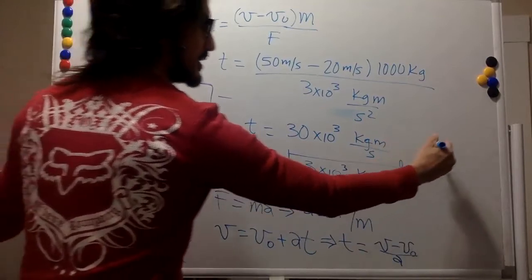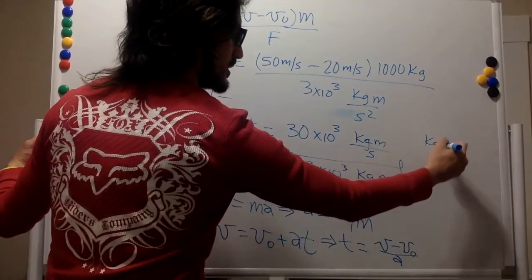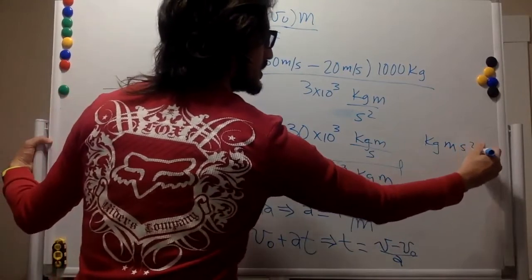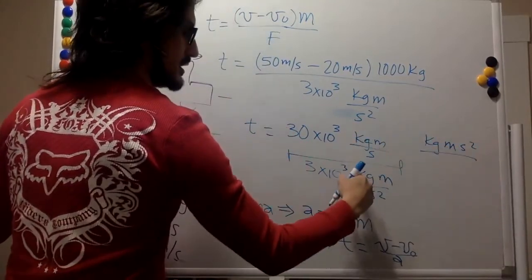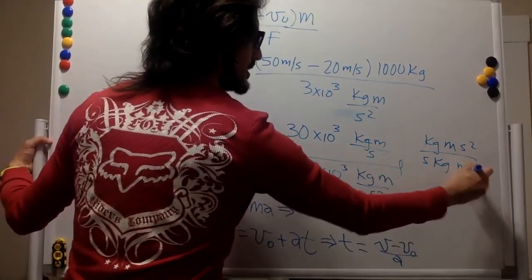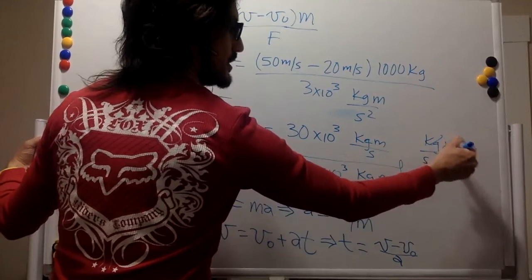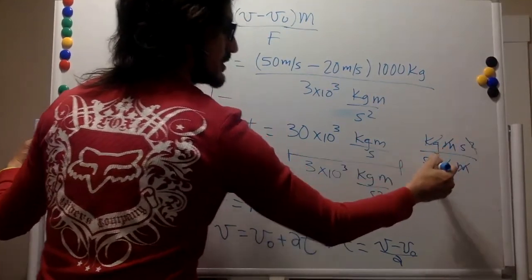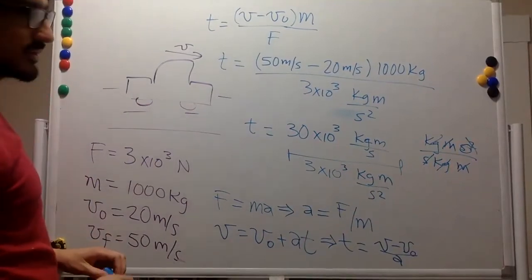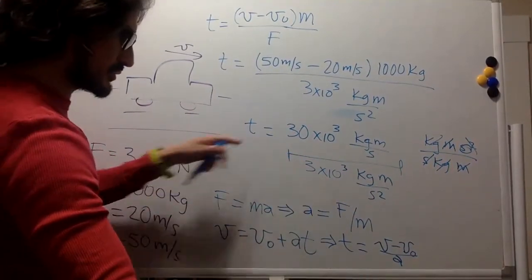Let's just look at the units. It's going to be kilogram meter per second squared divided by second kilogram meter. So the kilograms go away, the meters go away, and one of the seconds goes away. And so we have seconds as the units, which is good because we're looking for a time.